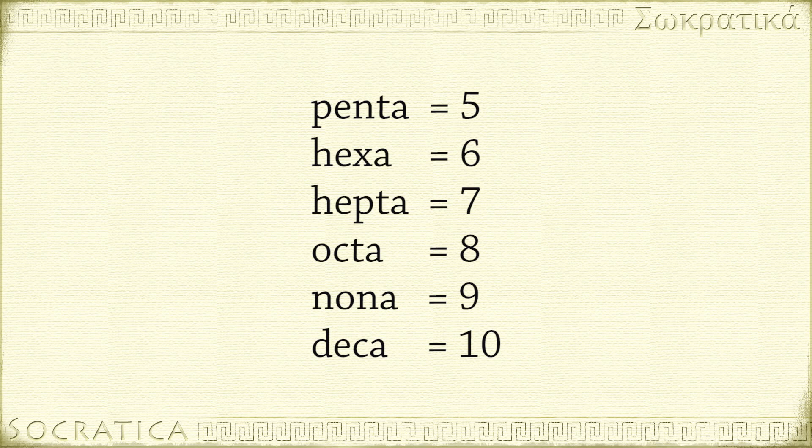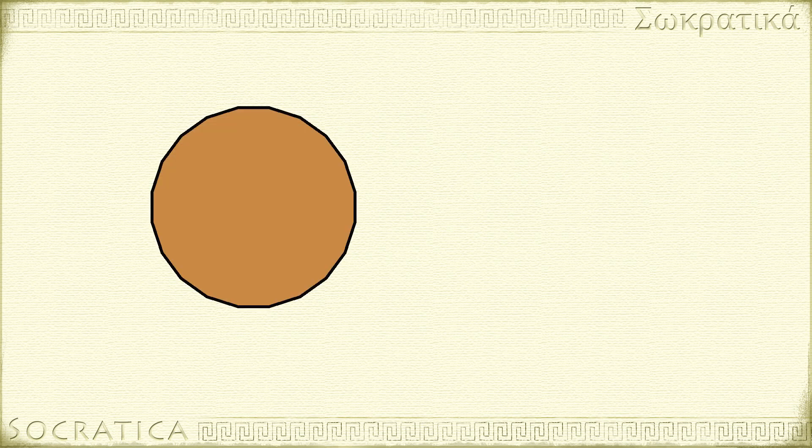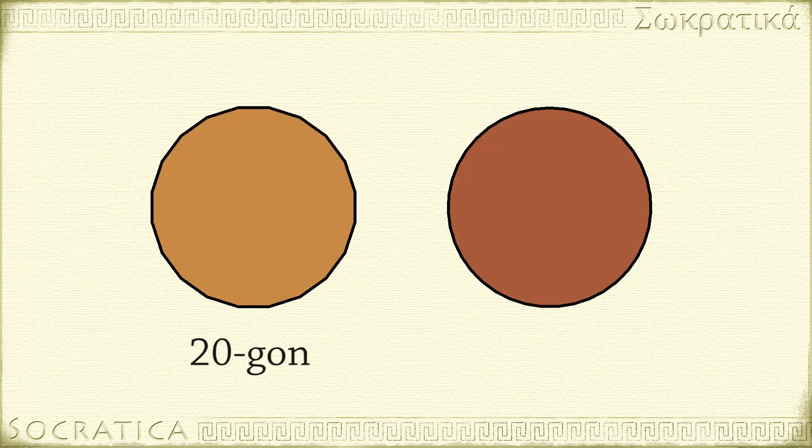When a polygon has a large number of sides, you can just call it an n-gon. A twenty-sided polygon is a twenty-gon. A thirty-nine-sided polygon is a thirty-nine-gon.